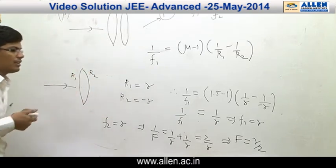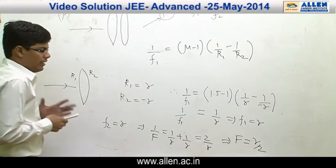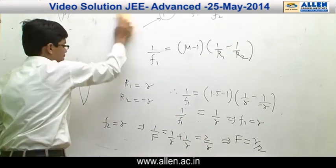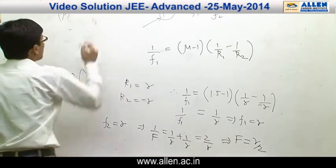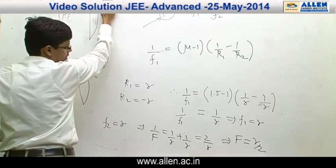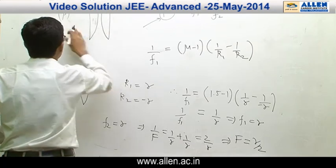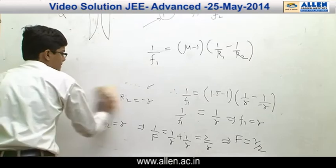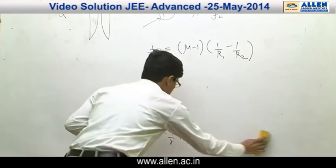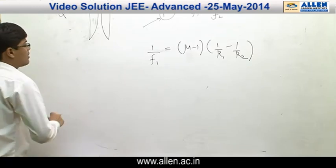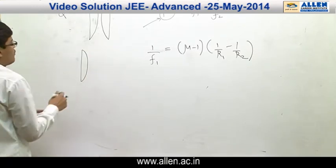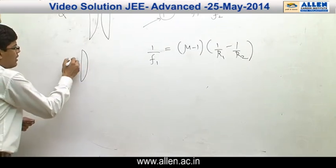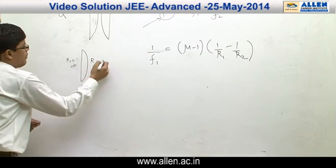Interestingly, P = 2 is coming in option B and D. Now we have to verify for Q. For the first lens of Q, the radius of curvature of the flat surface is infinite and the curved surface is −R.